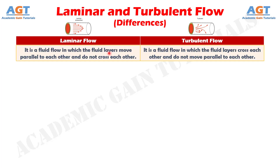Difference number 1. Laminar flow is a fluid flow in which the fluid layers move parallel to each other and do not cross each other, whereas turbulent flow is a fluid flow in which the fluid layers cross each other and do not move parallel to each other.